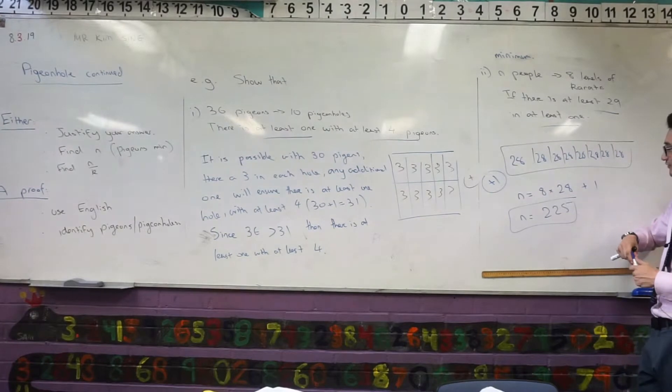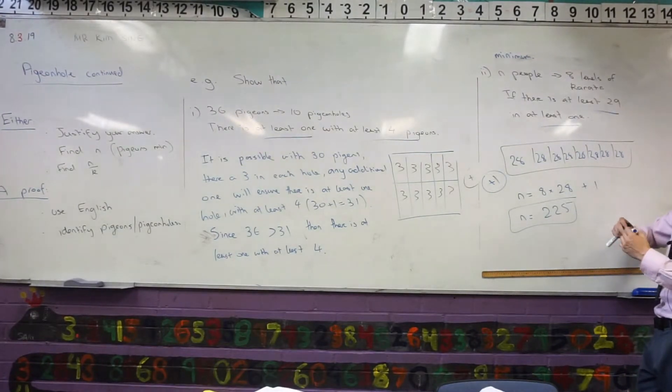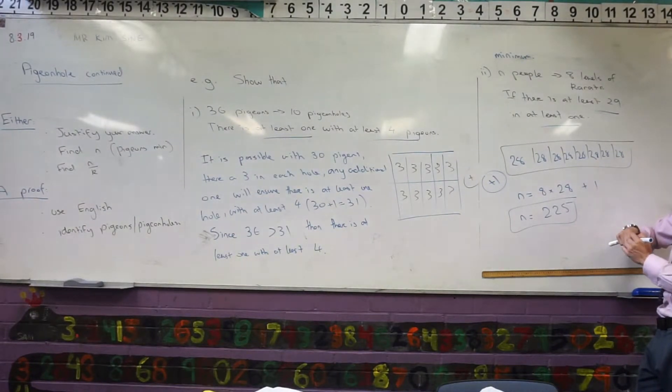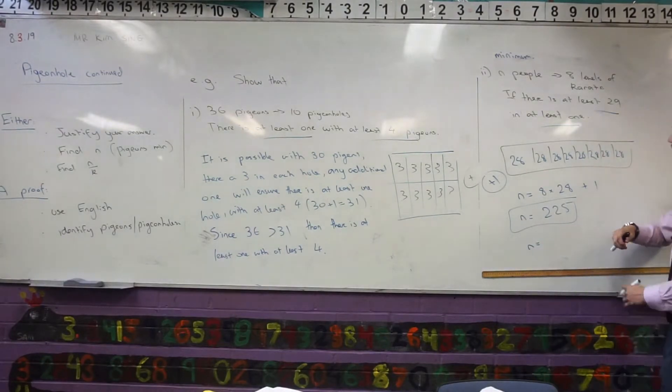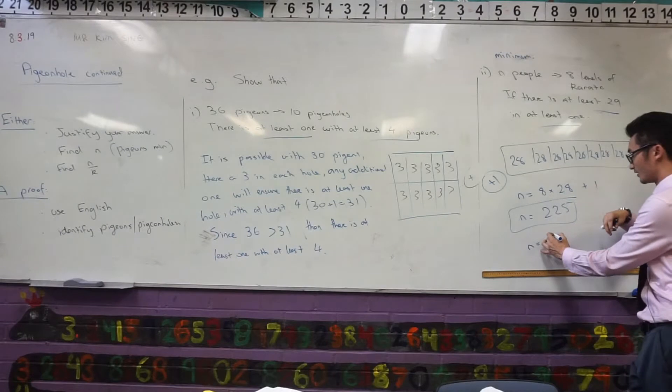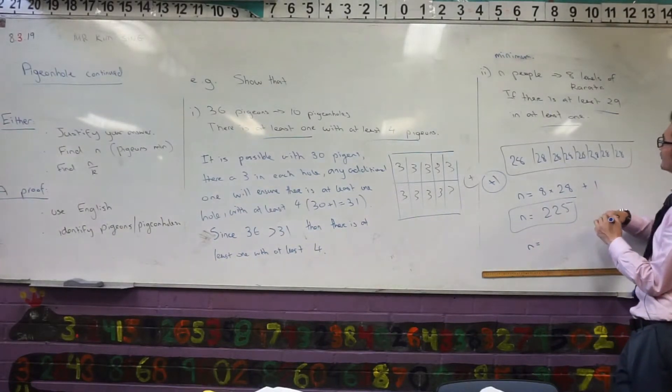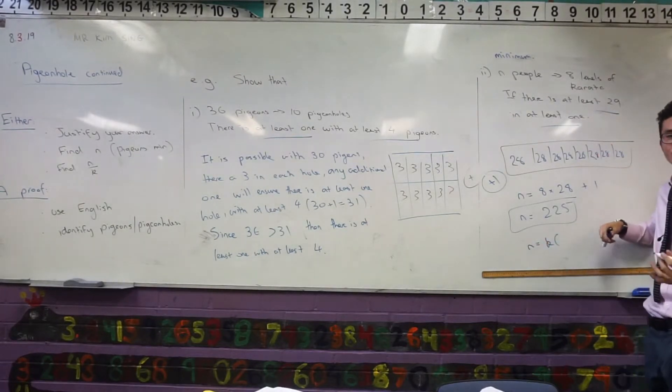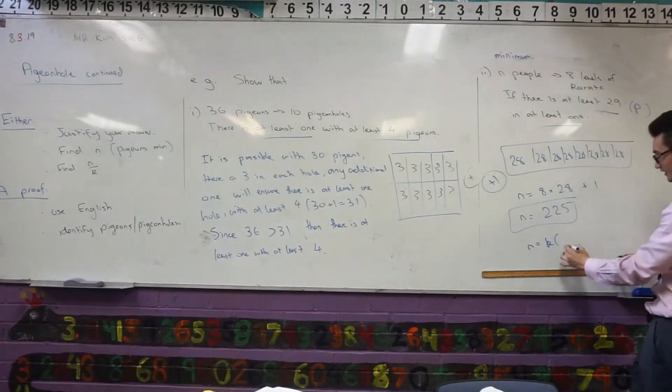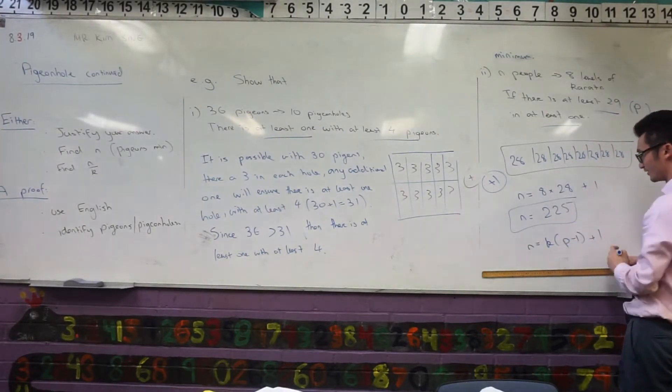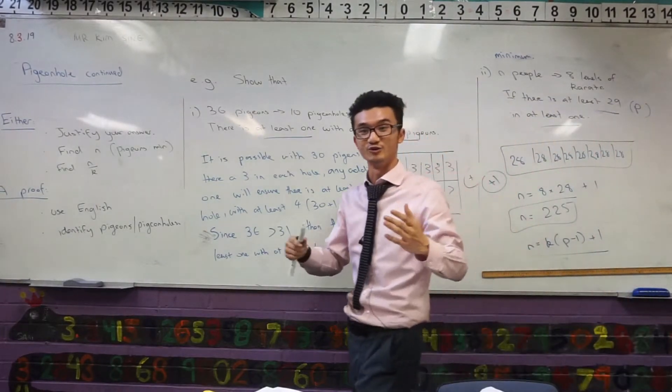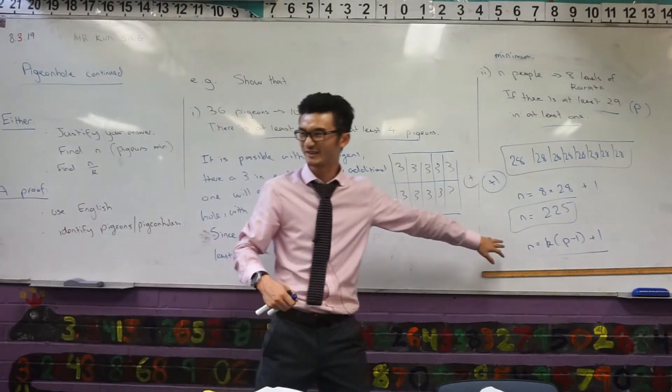Now this can be represented in a formulaic kind of way. So if K is your pigeons, if N is your people, so N is the number of pigeons. Yeah, I guess maybe we can say how many pigeons in each hole, what would that be, like P maybe? If this is P, then we just say K times P minus one plus one, right? That's maybe a guide to help you make sure you're on the right track. Does that make a bit more sense?